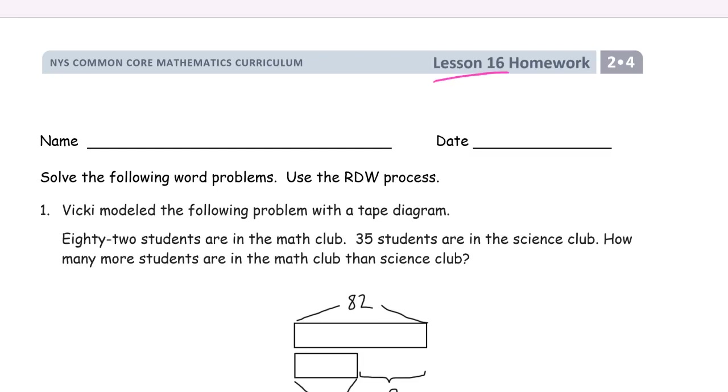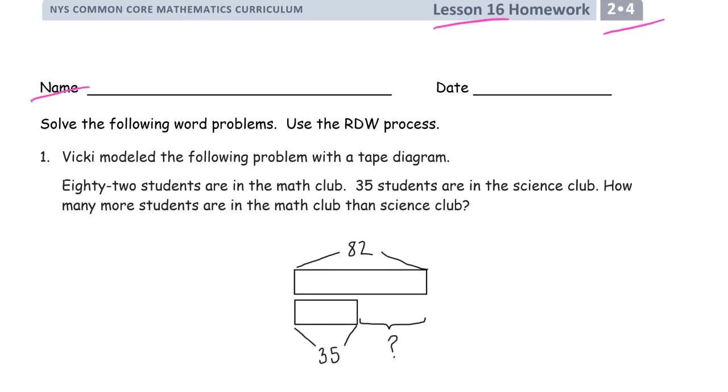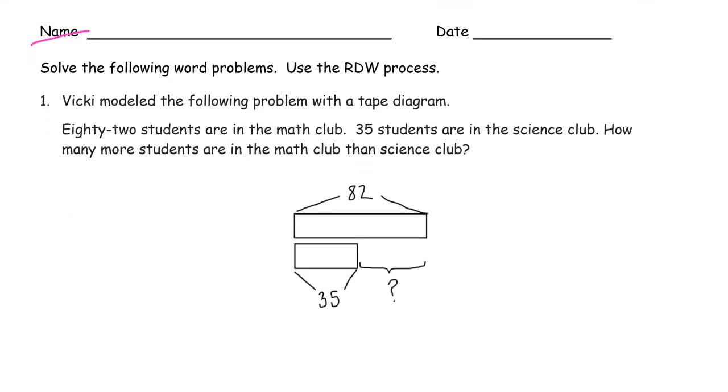Welcome to the homework for lesson 16, module 4 of grade 2. Always get your name on there first. We're solving word problems using our RDW process: Read, draw a picture, and write an equation and answer statement. Always, every day, all the time, every word problem, whether it's homework, test, problem set, application problem, whatever it is, always RDW with word problems.